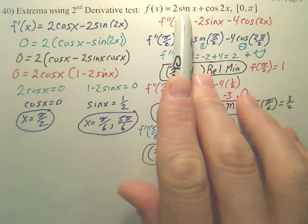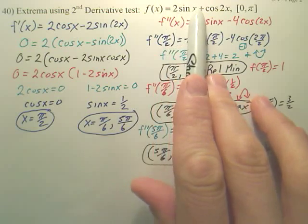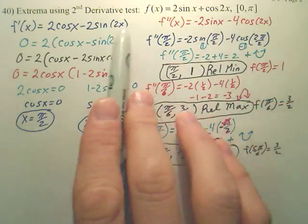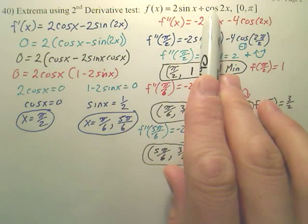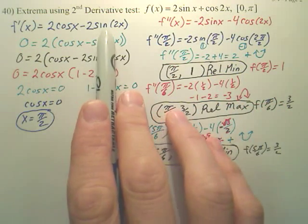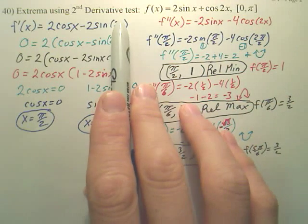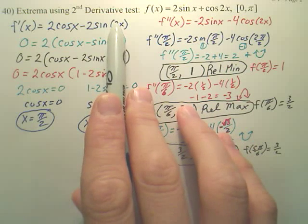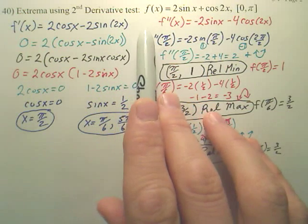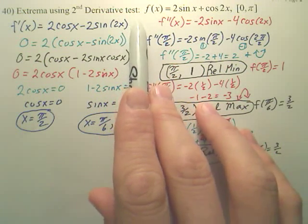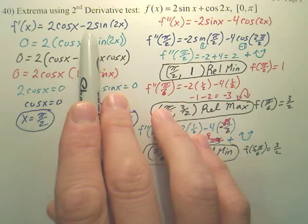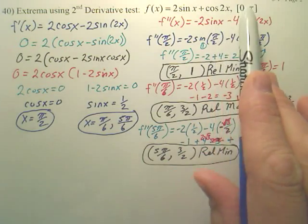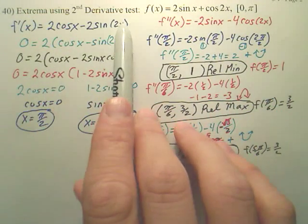When we derive the function, you get 2 sine x and 2 cosine x. When you derive cosine 2x, you first derive cosine to get negative sine, leave the 2x in the middle, then derive the inside 2x using the chain rule — that gives you the factor of 2 in front. So the derivative of cosine 2x is negative sine 2x times 2, with the 2 moved to the front. That's your first derivative.